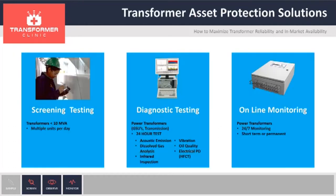Basically, we have three different solutions depending on the size of the transformer. The first one is for transformers smaller than 10 MVA — we can do multiple tests per day. The next step will be a diagnostic test, which is typically a 24-hour test, because we want to have all the load changes, temperature changes, and operating changes during that period. This is applied for power transformers that have several hundred MVAs, such as a transmission transformer or generator step-up transformer. And if you have a critical unit or an active fault, we can do continuous monitoring.